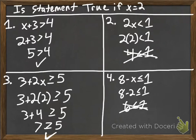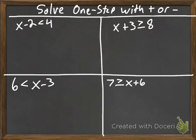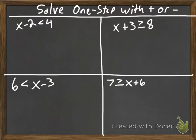We always want to check to make sure our statement is true. Now, here we have solving in one step with addition or subtraction. Let's start with the top left: x minus 2 is less than 4. Remember, we treat this inequality just like an equal sign — we still have to keep our balance. So x minus 2, plus 2 on both sides, gives us x is less than 6.